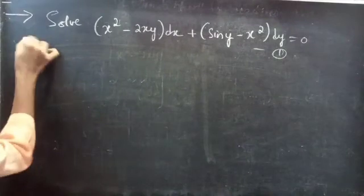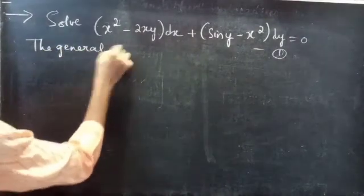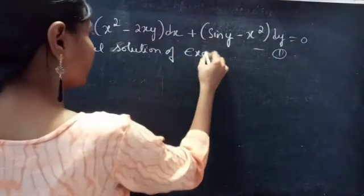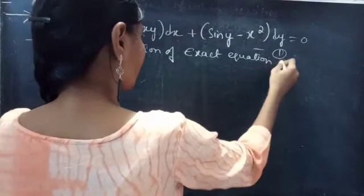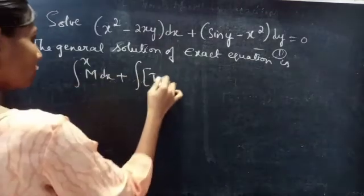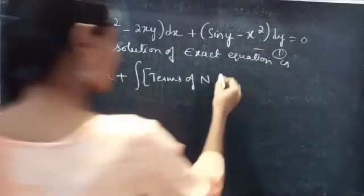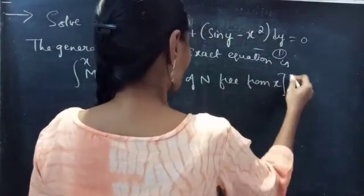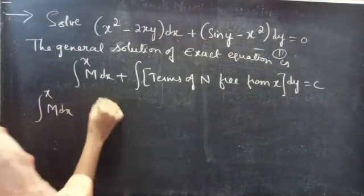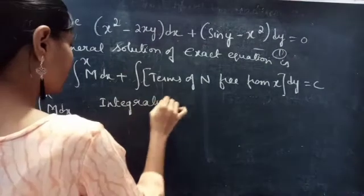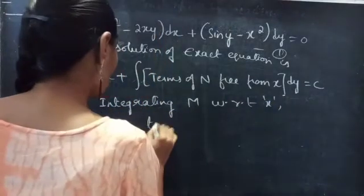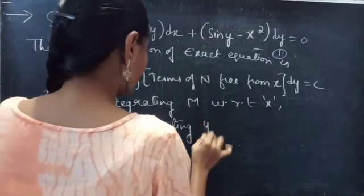Now we'll find the general solution. We know that the general solution of an exact equation is given by the integral over x of M dx plus the integral of terms of N free from x, with respect to dy, equals a constant. Let's consider the first integral — integrating M with respect to x, treating y as constant.